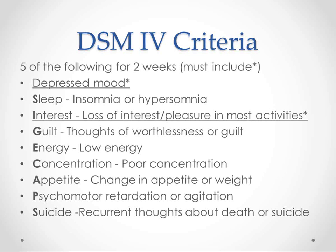I is for loss of interest in most activities that people used to find pleasurable. G is guilt or worthlessness. E is low energy level. C is loss of concentration. A is loss of appetite — or it could be that you gain weight as well, and we'll talk about what it might mean if it's an atypical presentation like that. P is psychomotor retardation or agitation. This is often when people's bodies slow down; they get some physical effects of their depression. In some cases, they can also have pain syndromes associated with depression.